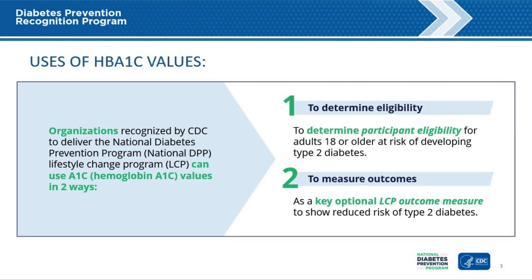Organizations recognized by CDC to deliver the National DPP LCP can use A1c values in two ways: to determine participant eligibility, and to measure risk reduction using this optional outcome. A1c is one way to determine if an adult 18 or over is at risk of developing type 2 diabetes and if that adult is eligible to participate in the National DPP. In addition to eligibility, A1c is used as an optional reporting measure by program delivery organizations to show a reduced risk of type 2 diabetes.